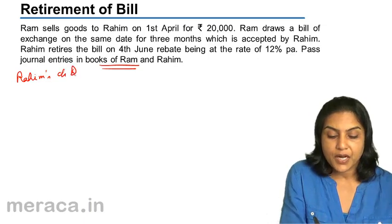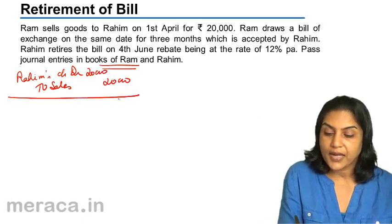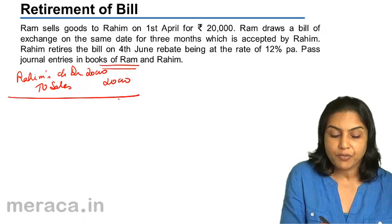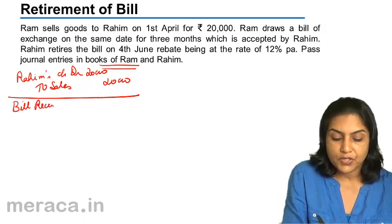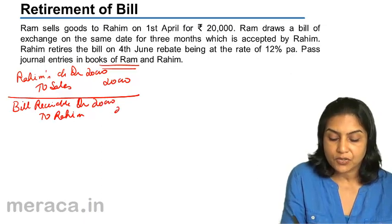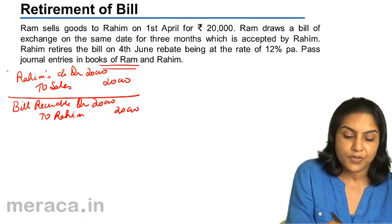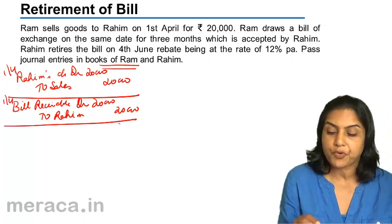In the books of Ram: first, Ram sells goods — entry is Rahim's account debit to sales account, amount 20,000. Next, the bill is accepted — Ram draws a bill and Rahim accepts it — so bills receivable account debit to Rahim's account, 20,000. Both these transactions are dated 1st April.